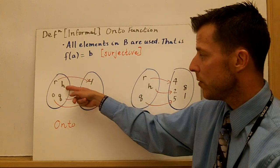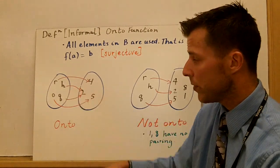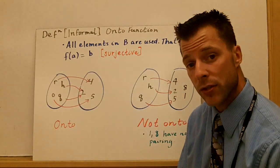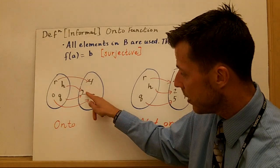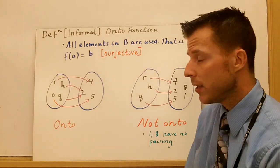Every element in B is used. That means something from A goes to it. So even though 2 has two different inputs, h and q, that's fine. This is still an onto function because every y value is paired with an x.